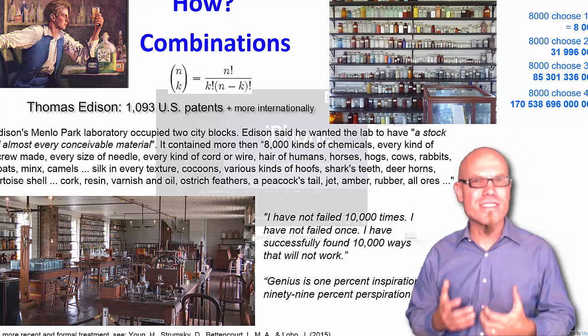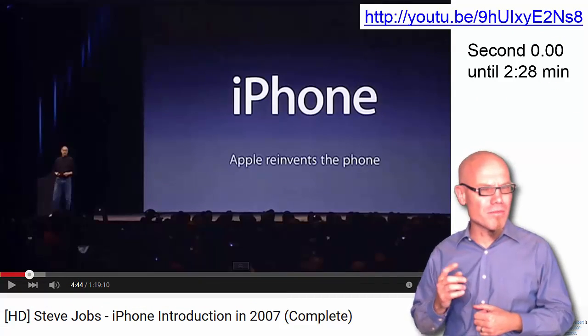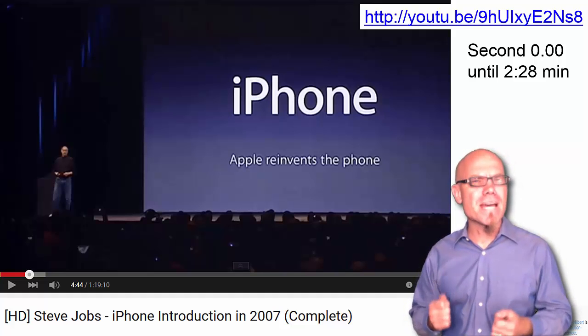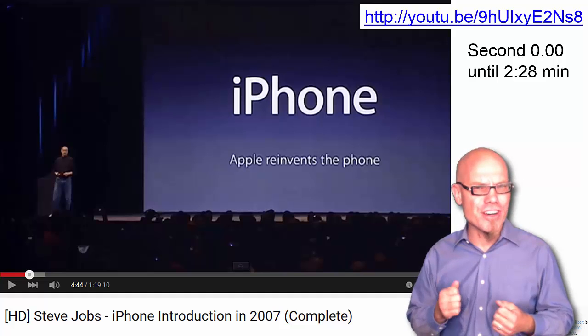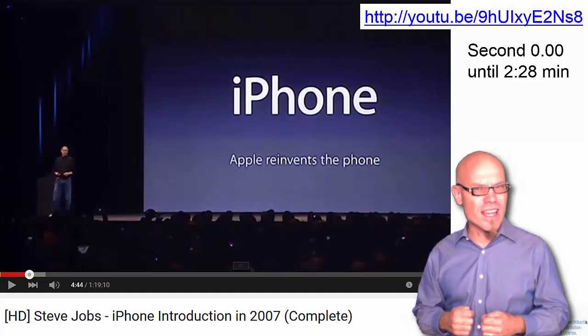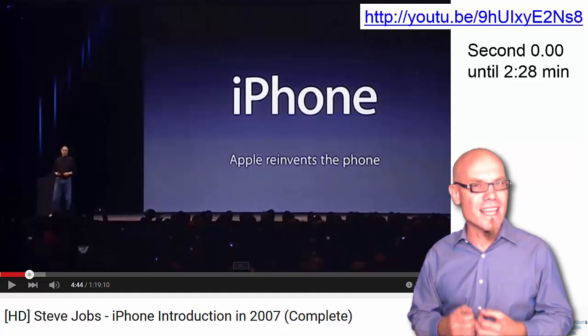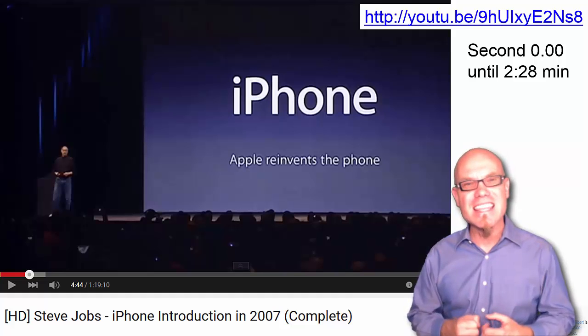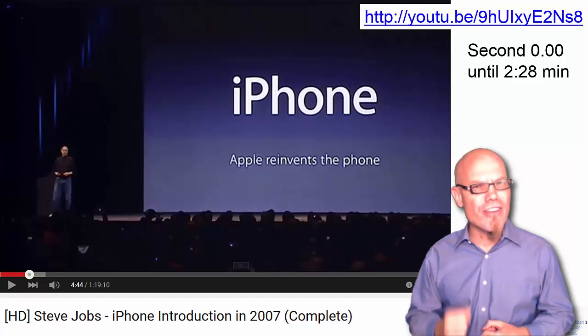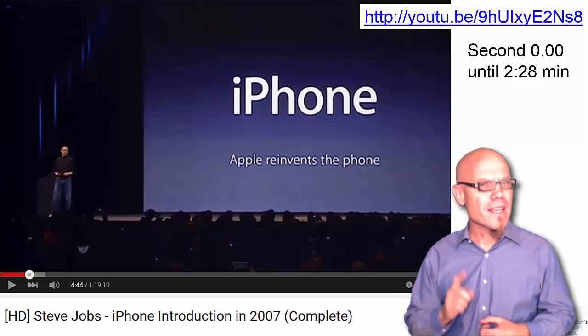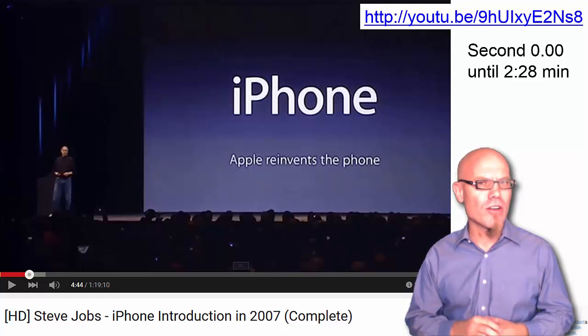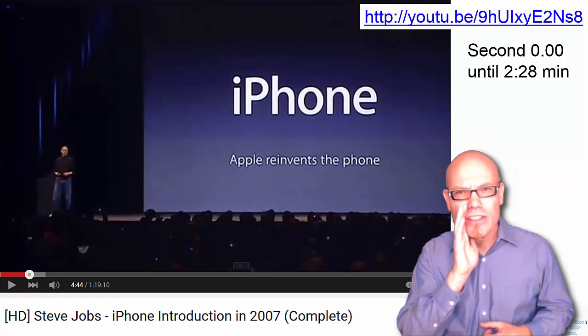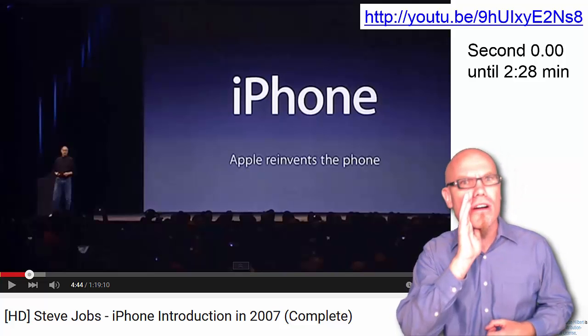That is 8,000 choose two. If you now choose three of them, you already have 85 billion choices. And if you choose four out of the 8,000, you have 170 trillion. There's 170 million, million ways you can choose four chemicals out of 8,000. So that's the power of combinatorics. And it still works today. Check out what many people say is the best presentation ever given, the day the legendary Steve Jobs presented for the first time their iPhone, the day that Apple reinvented the phone. And guess how Apple did it. Check it out. It has a lot to do with finding new combinations.